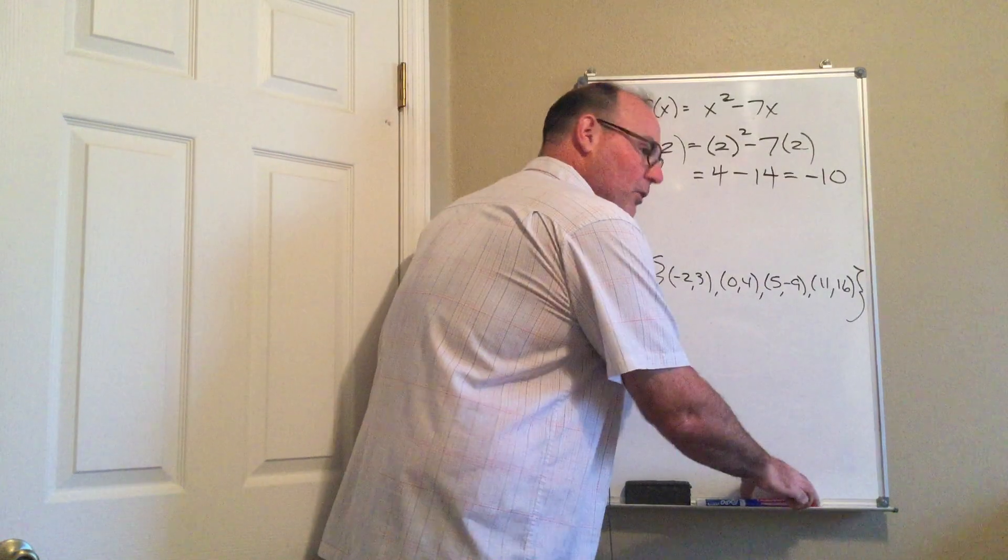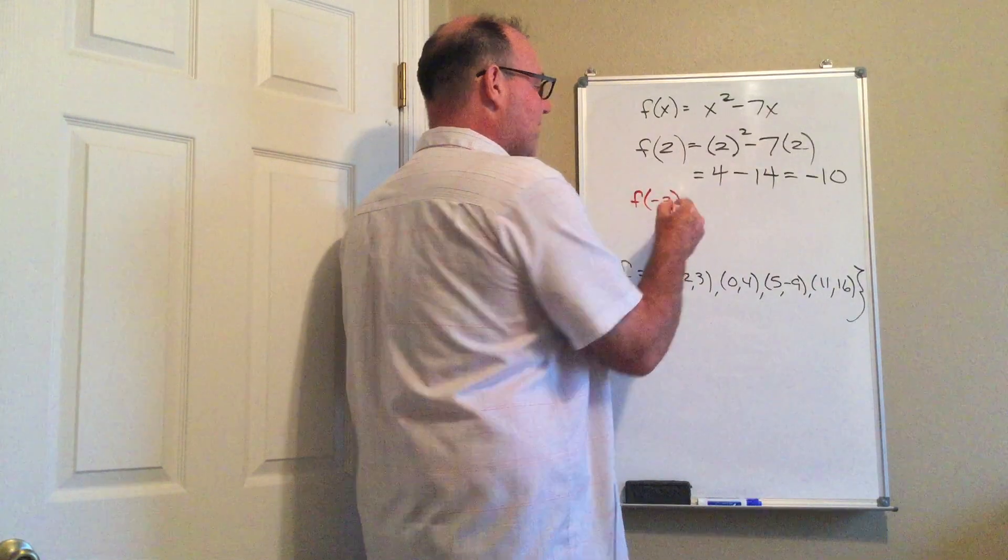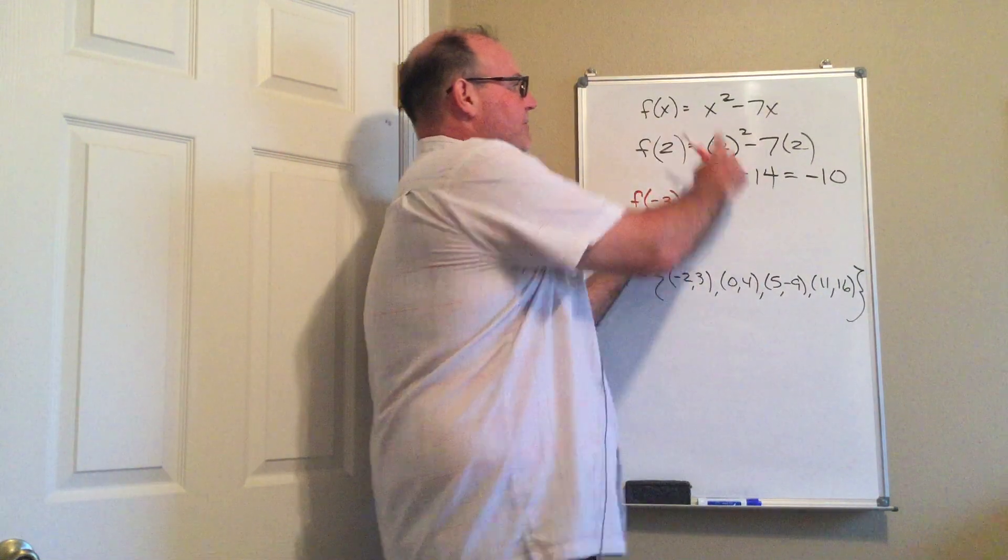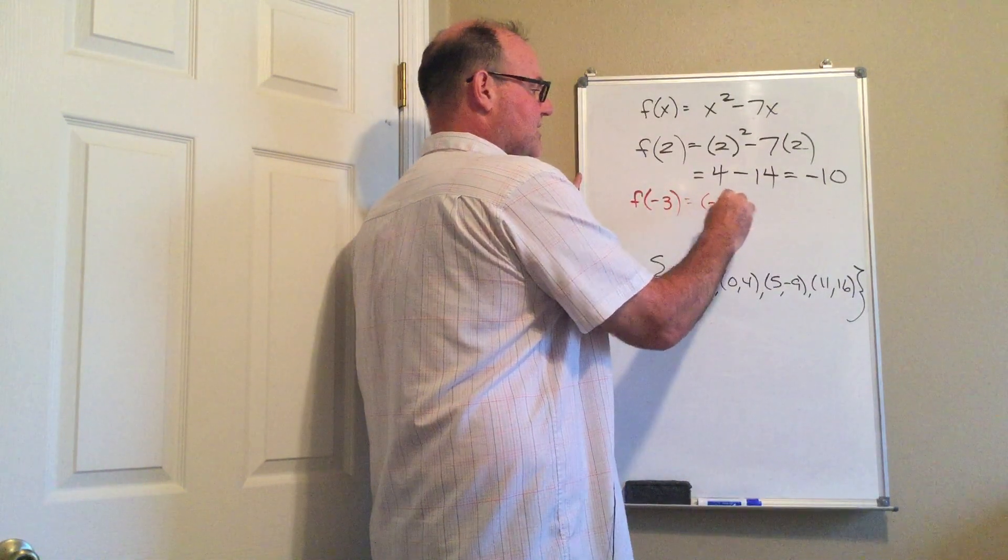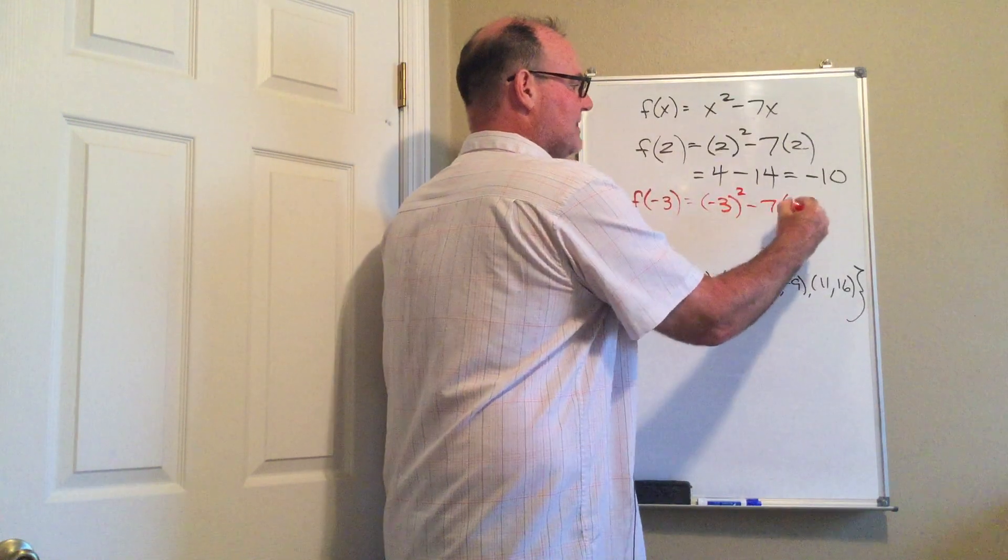I'm going to try another one because I want to make sure you're clear when I plug in a negative. So let's say negative 3. So again, what I'm plugging in is what I'm going to be squaring. So on this one I'm going to put it in parentheses to make sure I've got negative 3 squared minus 7 times negative 3.